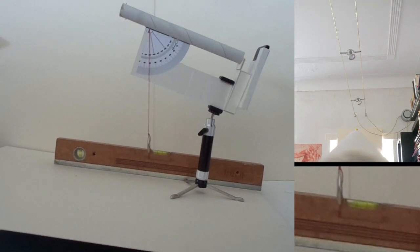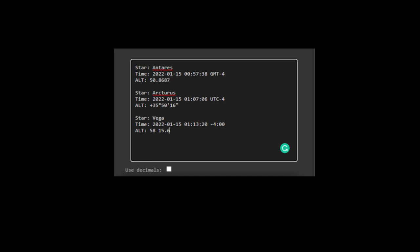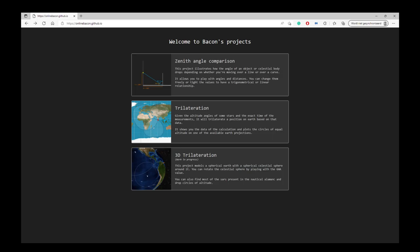The next thing you have to do is repeat this measurement to two other stars and register the exact time you made your observations. And the only thing you have to do now is to go to a website, in this case onlinebacon.github.io and enter your data.